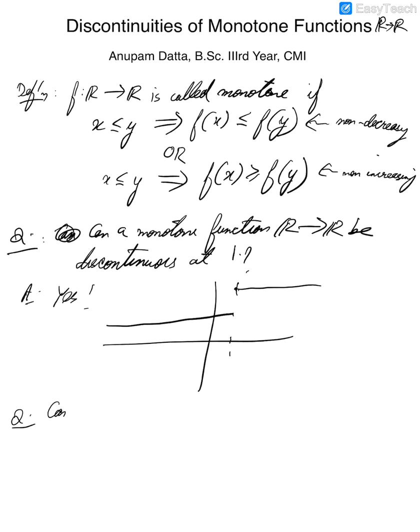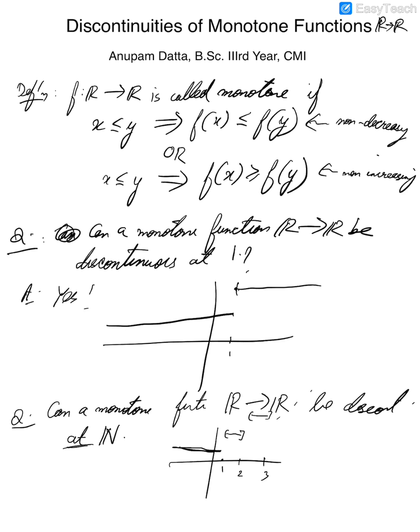Now, if we ask the same question for N, then what happens? Can a monotone function from R to R be discontinuous at precisely N? By 'at' I mean precisely at, so that should be the only point of discontinuity. The answer is true even in this case. Intuitively, you have a stair kind of function. These two cases give an affirmative answer.